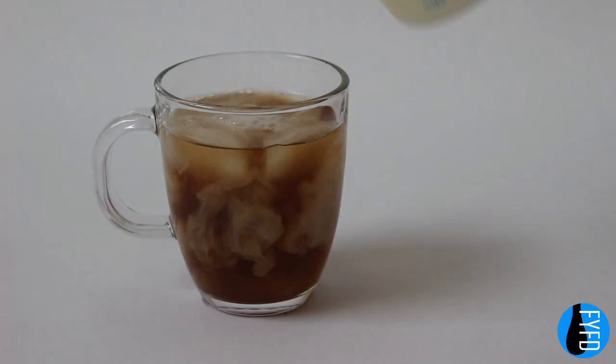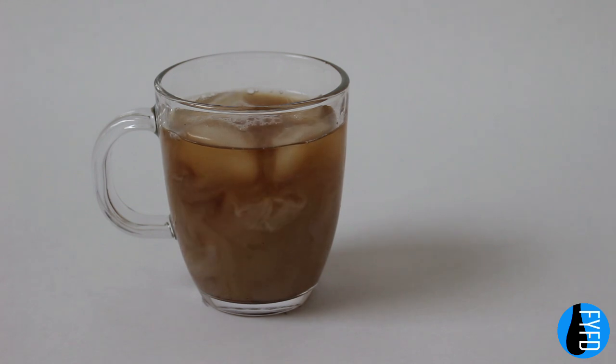You've probably noticed at some point that crazy turbulent motion that happens when you pour milk into tea or coffee. You're combining fluids with different densities, and that's a breeding ground for the Rayleigh-Taylor instability.